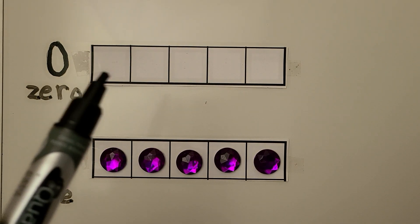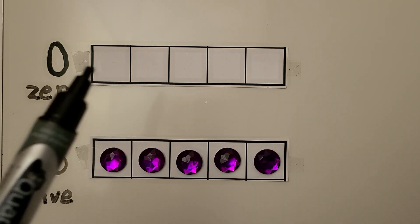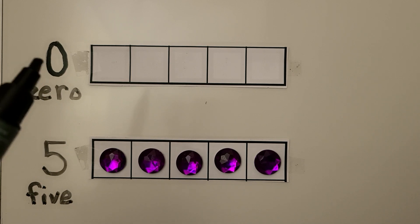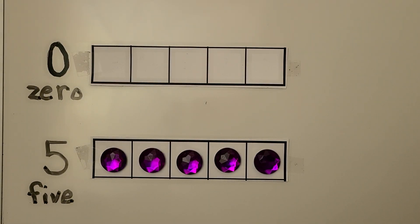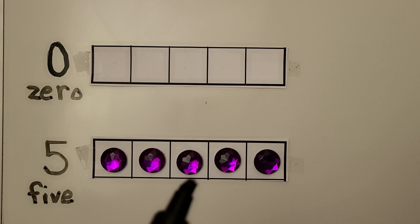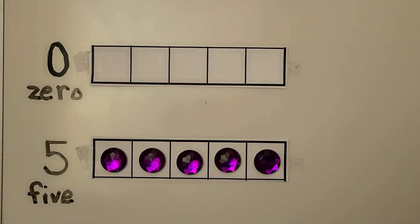This five frame has no counters. There are none. There are zero counters. This five frame has one, two, three, four, five counters, and it's full. If the five frame is empty, it has no counters — it has zero counters. None. Not any. The five frame is full with counters for the number five.